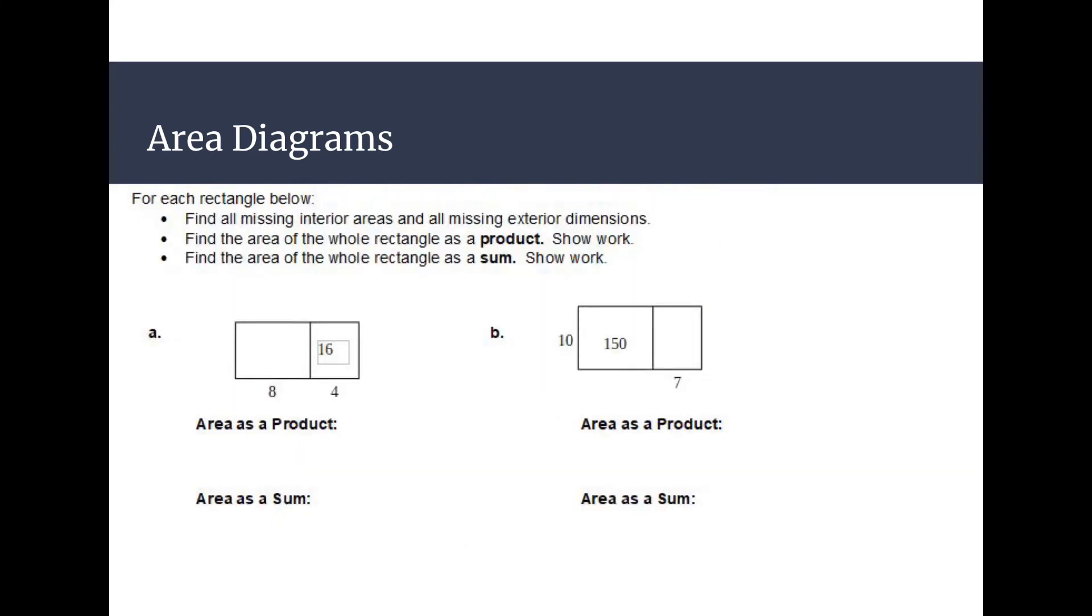All right, so we have the same thing going on, feel free to fill in part of the information that we need and then find area as a product and areas of sum. So for this first part I'll get you started, we need to figure out what this is, what the dimensions are going to be. I do see that this is 4, and if this whole area is 16 then we've got to figure out 4 times what number it's going to give me 16.